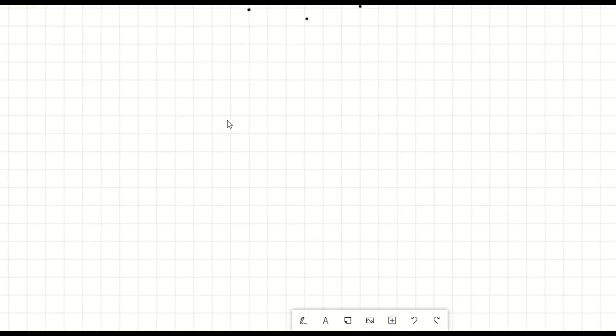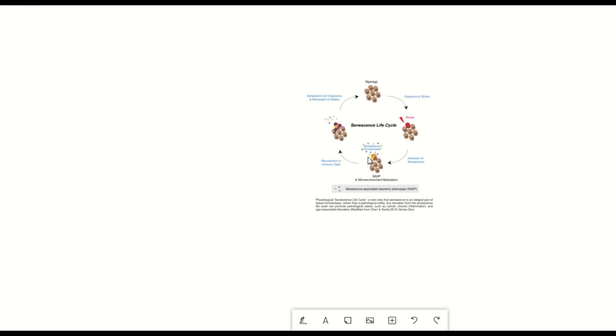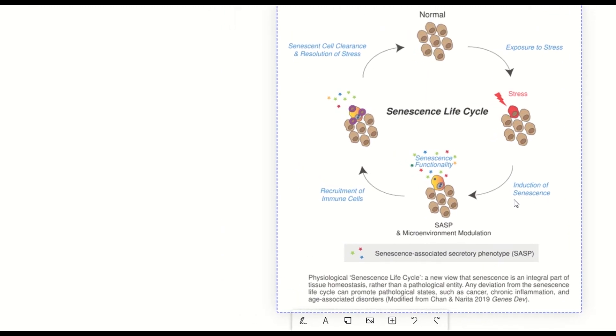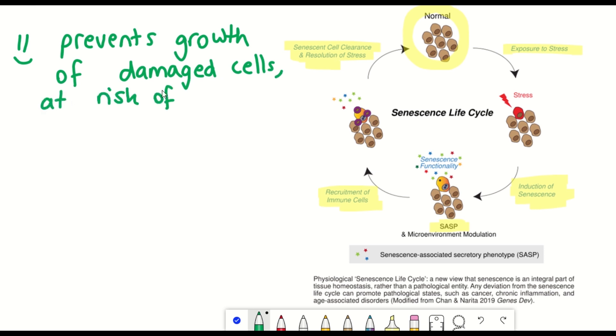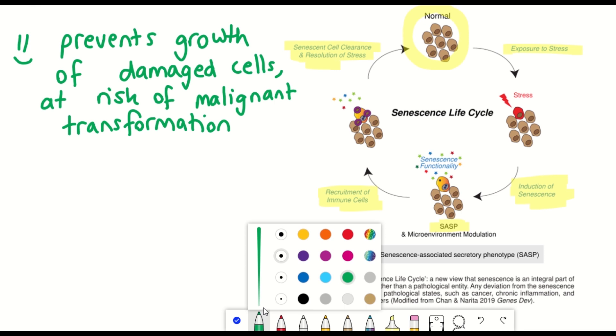So recently in the lab, we have described senescence as a physiological life cycle whereby normal cells can get exposed to stress, and that stress can lead to the induction of senescence and the development of the SASP, which can therefore enable the recruitment of immune cells to clear these senescent cells away and to resolve any stress that has occurred and to go back to normal. So this helps to prevent growth of damaged cells that may be at risk of malignant transformation.